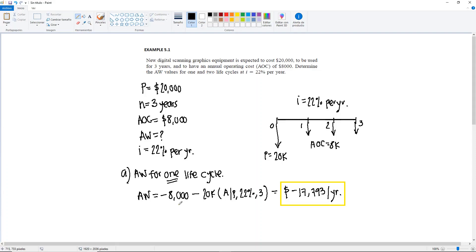For part B, we're going to do something similar, but now for two life cycles. So we have part B, annual worth for two life cycles.